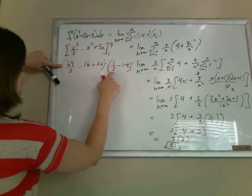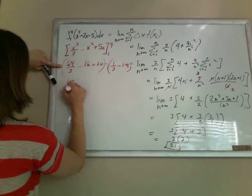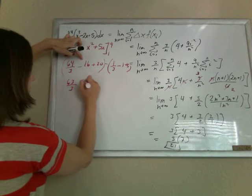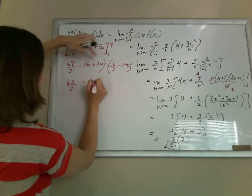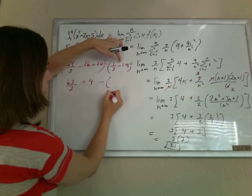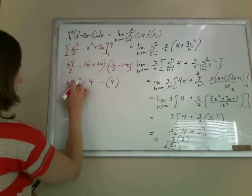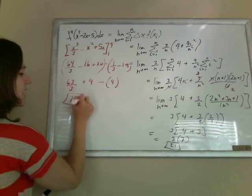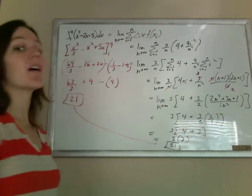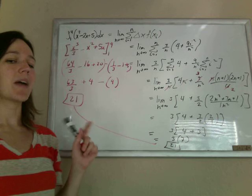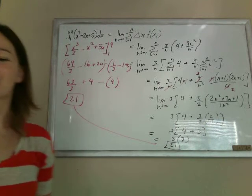So 64 thirds minus 1 third is 63 thirds. Minus 16 plus 20 is 4. And then I have minus... And minus 1 plus 5 is 4. So 4 minus 4 goes away. 63 over 3 is indeed 21, which, oh my gosh, Miracle of Miracles matches. Ridiculous, right? Awesome.